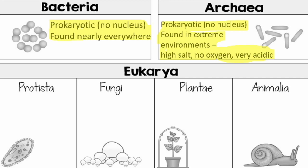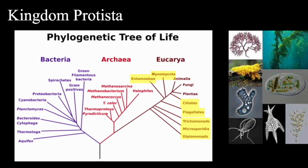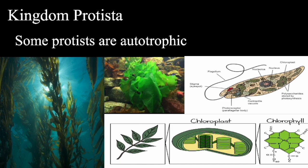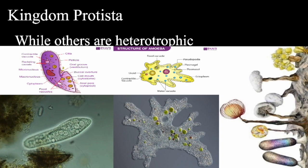Going to the next kingdom, we have Kingdom Protista, looking at the phylogenetic tree of life. These are organisms with cells that contain a nucleus as well as membrane-bound organelles. Some protists are autotrophic, meaning protists possess chlorophyll that helps them in photosynthesis — for example, giant kelp or sea lettuce — which gives them that green color. While other protists are heterotrophic, meaning they have to get their food from other plants or animals.